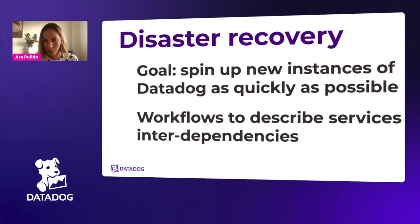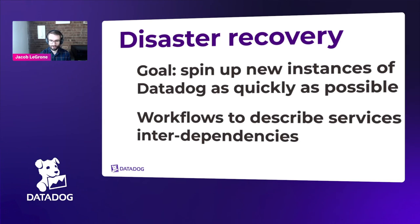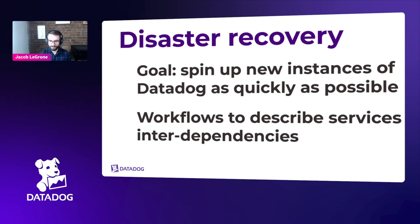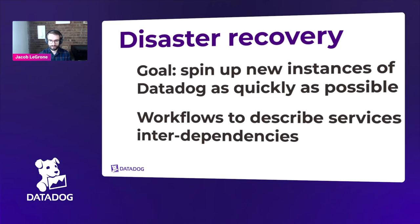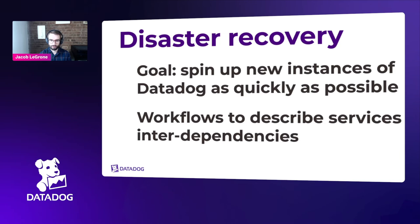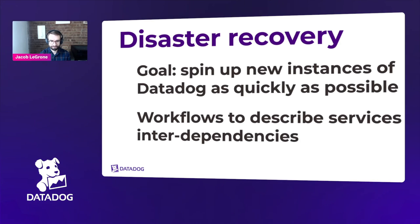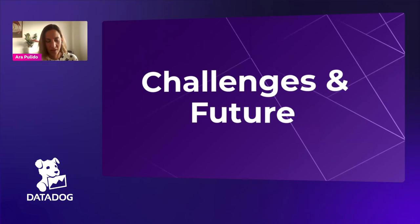We've been onboarding steadily — almost all applications running on Kubernetes have been onboarded to CNAB at Datadog, so we're getting much closer to that goal. One interesting DR challenge is that cloud providers have rate limits: if you spin up a thousand nodes within an hour or two, you run into challenges around which applications to get running first. CNAB workflows help us figure out where to most effectively spend our rate limits for provisioning core services that unblock downstream services.